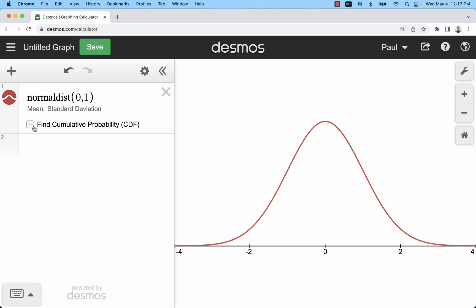If you want to start shading it and calculating probabilities click cumulative probability. You can put in a left side, a right side, or both.